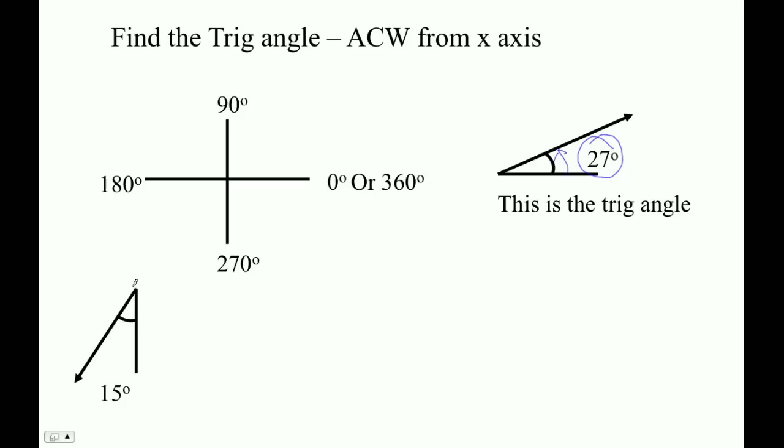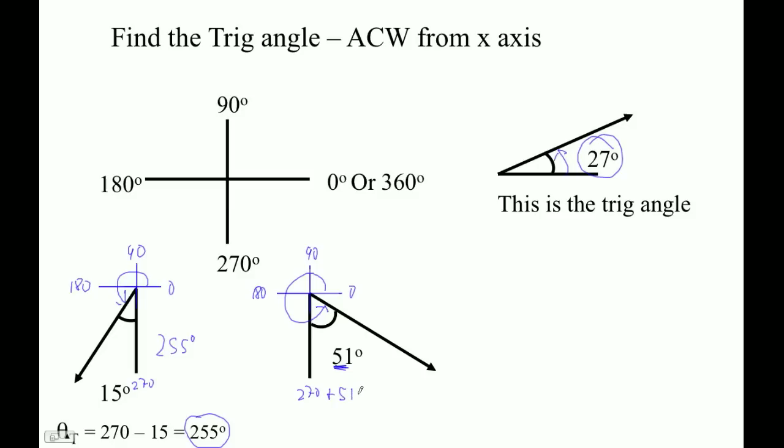So let's draw this in here. Here is 0, 90, 180, 270, which is down here. So this, the trig angle is all the way like that. So this is actually 15 degrees shy of 270. So you would say 270 minus 15, it would be 255 degrees would be the trig angle. Let's look at another one here. So let's draw our little, so 0, 90, 180, 270. So this guy went past 270. So it's 51 beyond 270, so you'd say 270 plus 51, and that's 321. So that's 321 degrees is the actual trig angle that we would use.